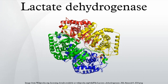Lactate dehydrogenases exist in four distinct enzyme classes. Each one acts on either D-lactate or L-lactate. Two are cytochrome C-dependent enzymes, and two are NAD(P)-dependent enzymes. This article is about the NAD(P)-dependent L-lactate dehydrogenase.